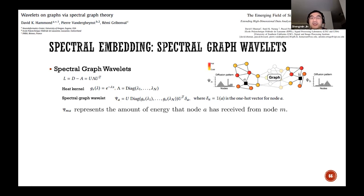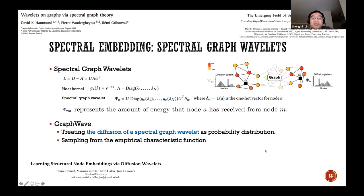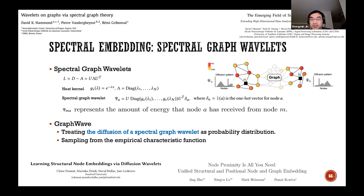The method GraphWave, proposed by Claire Donnat and collaborators, learns node embeddings from the diffusion patterns by treating them as probability distributions and sampling from the empirical characteristic function. Recently, Jin Zhu and colleagues proposed a general framework extending GraphWave by considering both network structures and the locations of nodes in the graph.